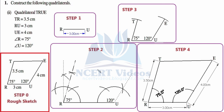Step number four is easy — we simply connect vertex T with E. We then tidy up by jotting down all the information from step zero onto our final figure: angles 75 degrees and 120 degrees at vertices R and U respectively, along with the measurements of the three line segments. With this, step number four is completed, and that completes exercise 4.4 of chapter 4, mathematics class 8 practical geometry.